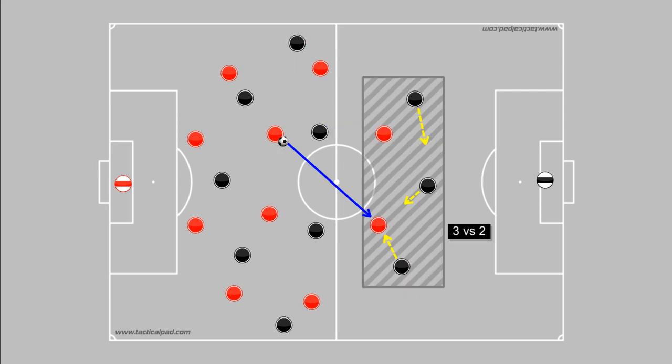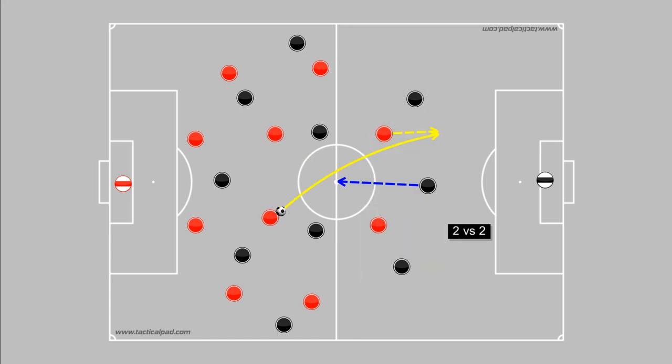Three center backs provide strong cover and numbers at the back after any loss of possession, meaning the subsequent transition into defense should be easier. If a defensive midfielder has dropped in to create a back three during the build-up, however, this can weaken the back line during defensive transition.